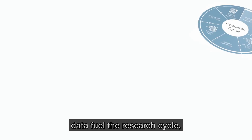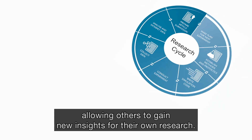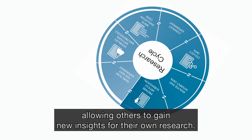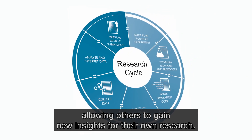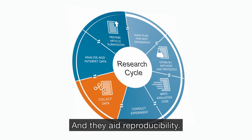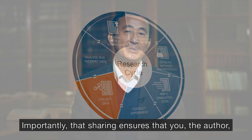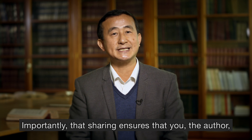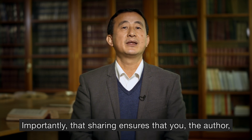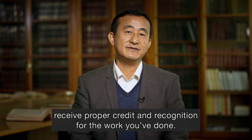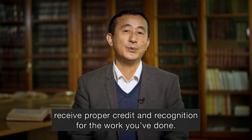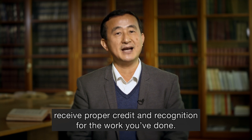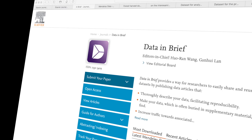Sharing data openly is a key part of open science. Data fuels the research cycle, allowing others to gain new insights for their own research, and they aid reproducibility. Importantly, that sharing ensures that you, the author, receive proper credit and recognition for the work you've done.